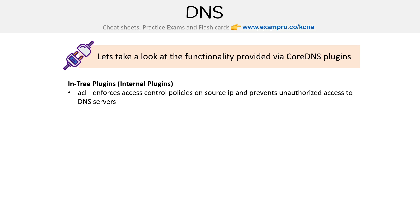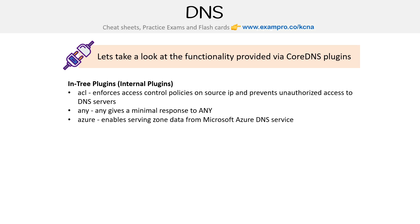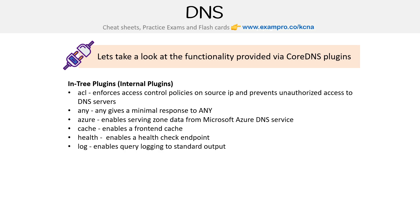So we have ACL, which enforces access control policies on source IP and prevents unauthorized access to DNS servers. There's Azure, to enable server zone data from Microsoft Azure DNS — that's one of those integrations with cloud service providers. Cache enables a front-end cache. Health enables a health check endpoint. And logs enable query logging to standard output — and many more, such as Route 53 for AWS.